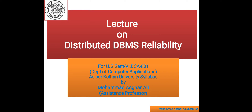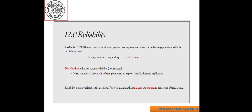Hello students. Today my topic is distributed DBMS reliability. A reliable distributed database management system is one that can continue to process user requests even when the underlying system is unreliable — in other words, even when components of the distributed computing environment fail. A reliable distributed DBMS should be able to continue executing user requests without violating database consistency.